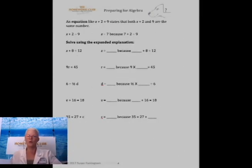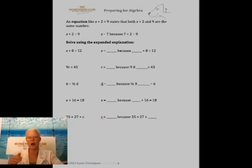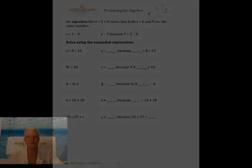Page four. Equations like these on this page are set up just so you understand that, for example, x + 2 is actually the same number as nine. x then becomes seven. The expanded explanation of these is how I want you to write this out. So the next problem is x equals something because that x + 8 = 12. Therefore, 4 + 8 = 12, therefore x is 12. I'll give you a few seconds.